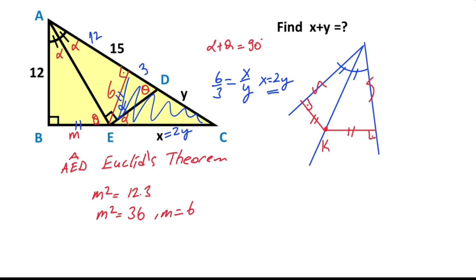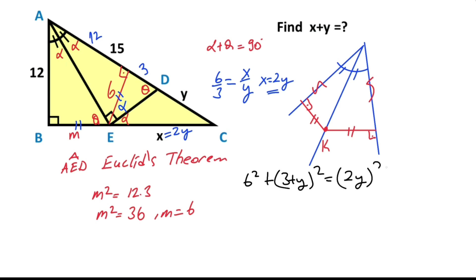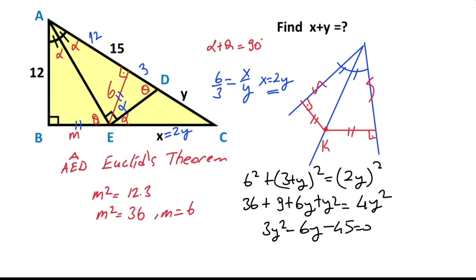Then for this triangle, if we apply the Pythagorean theorem: 6 squared plus (3 + y) squared equals (2y) squared. Therefore 36 + 9 + 6y + y squared equals 4y squared. If we organize the equation: 3y squared minus 6y minus 45 equals zero, so y squared minus 2y minus 15 equals zero. Since minus 15 equals minus 5 times 3, that means y equals 5 units.